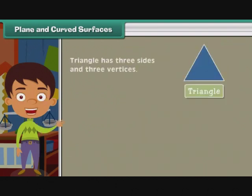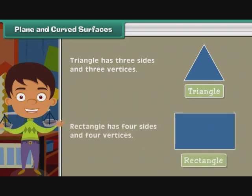Similarly, a triangle has three sides and three vertices. A rectangle has four sides and four vertices.